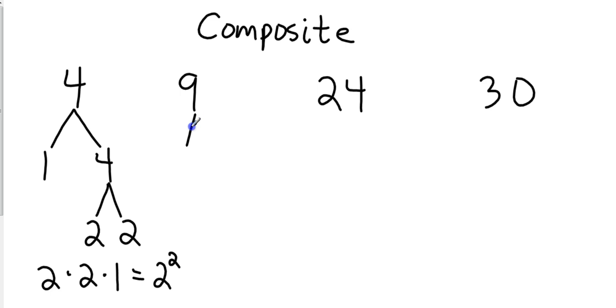How about nine? I can go one times nine. And then nine, I can go three times three. So this factorization is going to be three squared just for sake of space. I didn't write out three times three there.